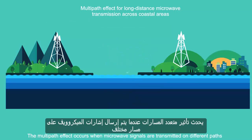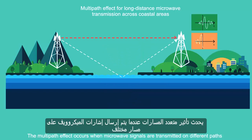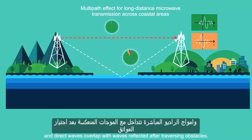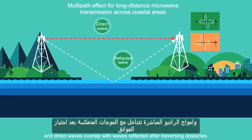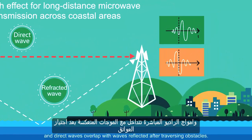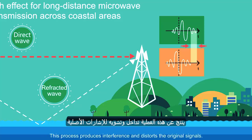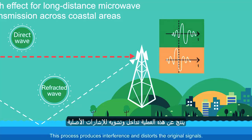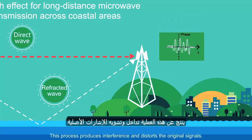The multipath effect occurs when microwave signals are transmitted on different paths and direct waves overlap with waves reflected after traversing obstacles. This process produces interference and distorts the original signals.